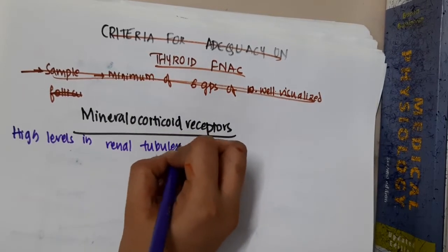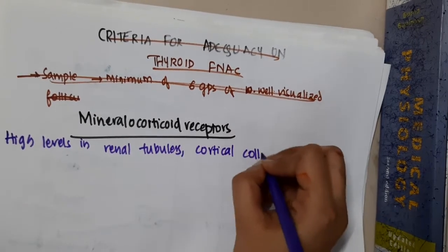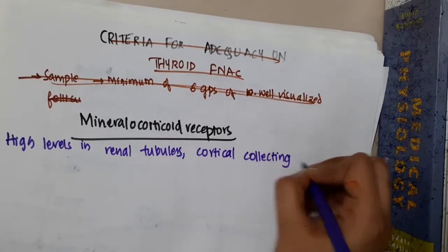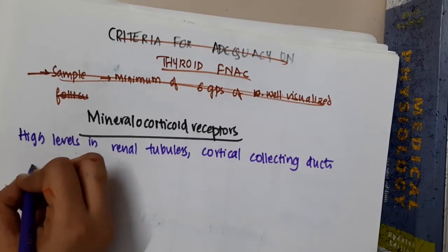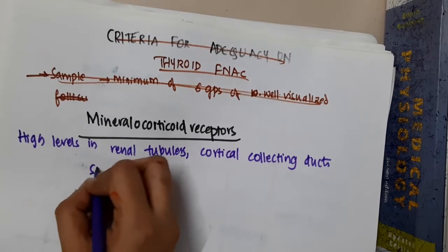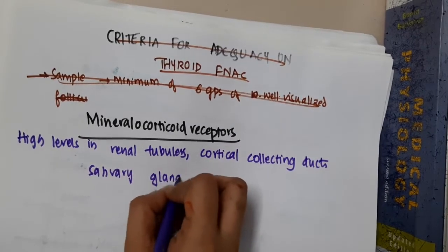They are also present in high levels in cortical collecting ducts, and in other regions like salivary glands and colon.